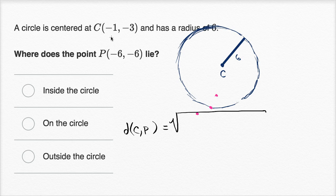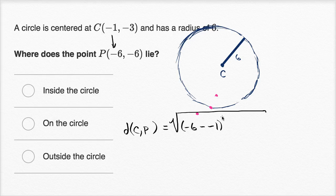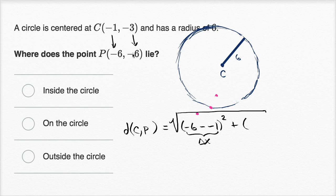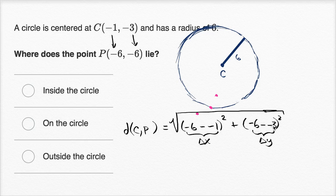So what is our change in X? Viewing C as our starting point and P as our end point, our change in X is negative six minus negative one, and we're going to square it. Then plus our change in Y squared — we're going from negative three to negative six, so our change in Y is negative six minus negative three, and we're going to square everything.